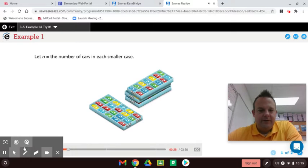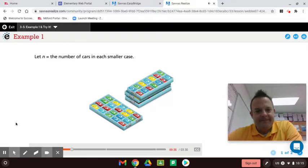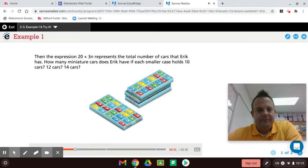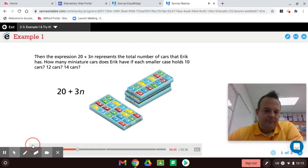How can you evaluate an algebraic expression? Let's find out. Remember, a variable can represent an unknown number or any number in a set of data. Then the expression 20 plus 3n represents the total number of... So here the 20 is the constant. This is the sum of two terms.